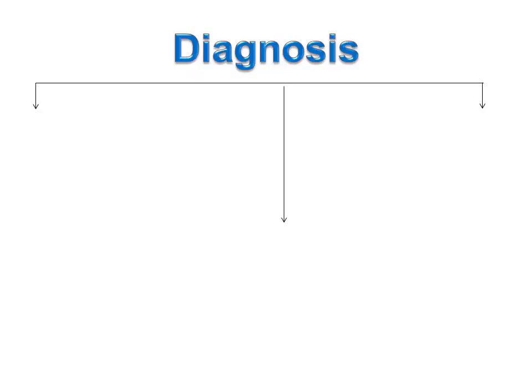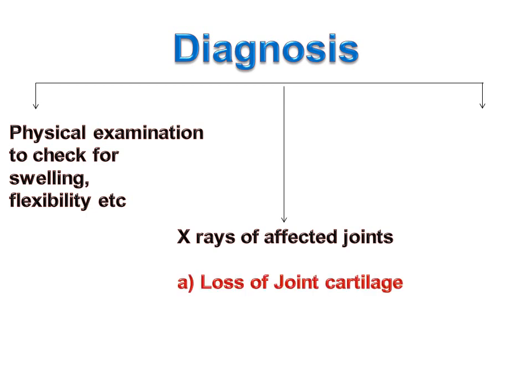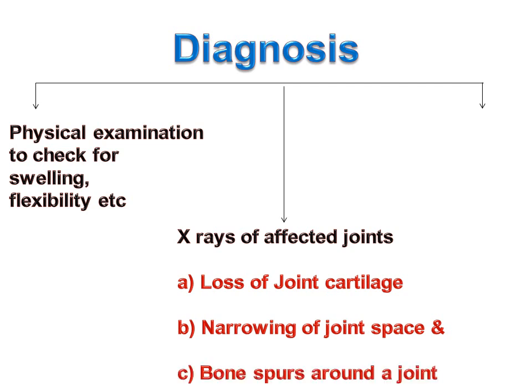Diagnosis of osteoarthritis involves a physical examination with the doctor to check for swelling and flexibility. The main way of diagnosing osteoarthritis is by X-rays of affected joints. Common X-ray findings include loss of joint cartilage, narrowing of the joint space in the affected joints, and bone spurs around the joint. MRI can help provide more information in complex cases.